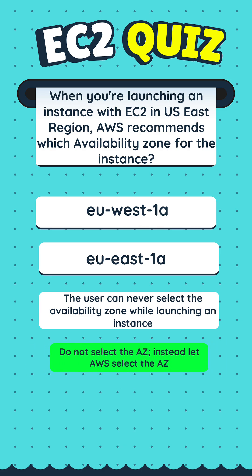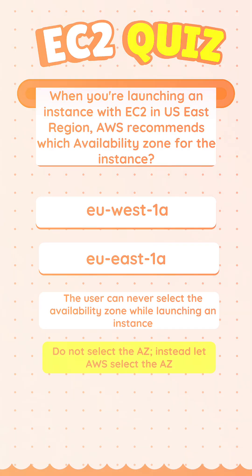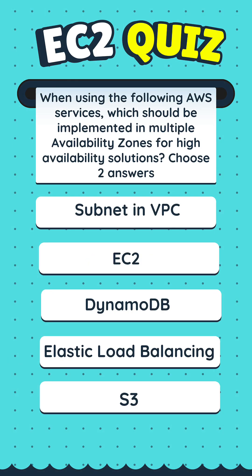Times up. The correct answer is D. When using the following AWS services, which should be implemented in multiple availability zones for high availability solutions? Choose two answers.